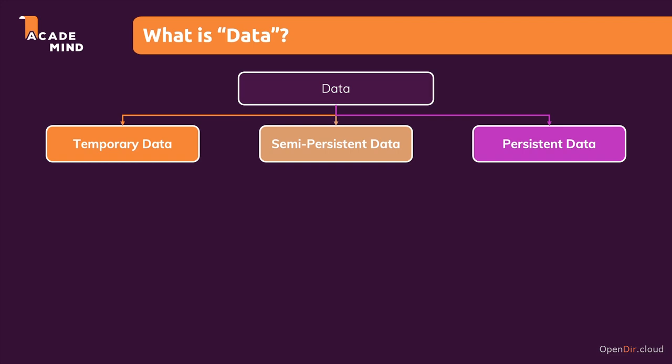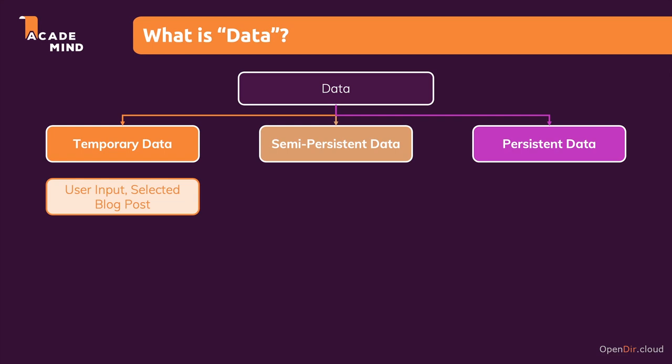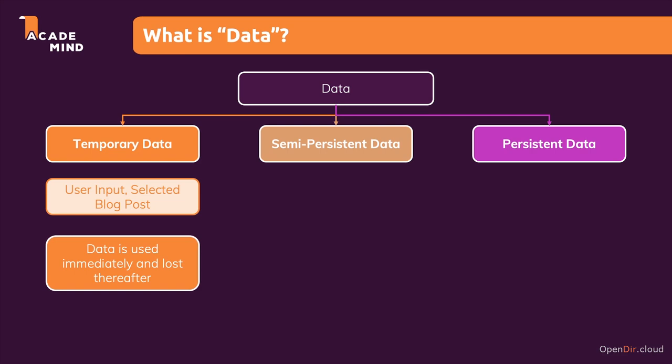What is temporary data? Well, that would be the user input in some form, or maybe a selected blog post which we selected by entering a specific URL. This is data which we need to work with — we want to process that input, fetch the appropriate blog post from a database, and show it to the user with help of a template. But this data is temporary because it's not important in the future. It's used immediately and then lost thereafter.